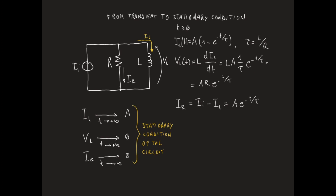It is worth emphasizing that in stationary conditions, the current flowing through the inductor has the same value as the amplitude of the step signal, while the voltage across the inductor is zero. In stationary conditions, when the current Ii has been equal to A for a long time, everything goes as though the inductor behaved like a short circuit.